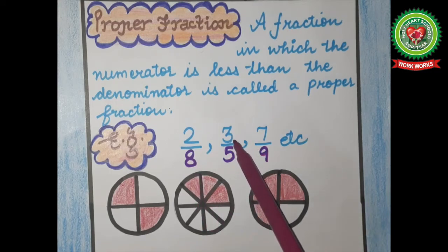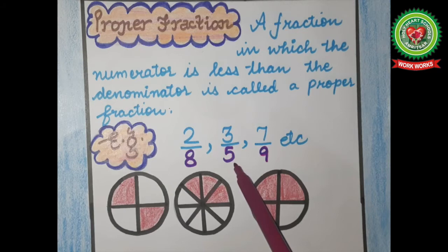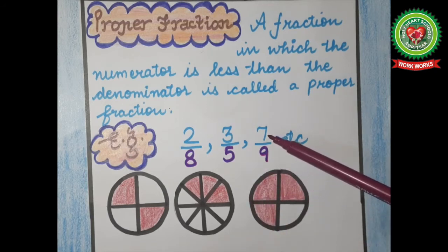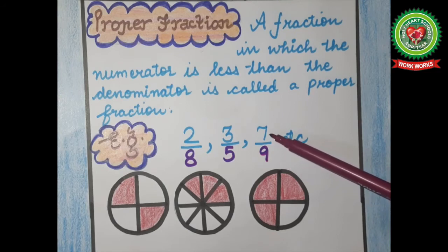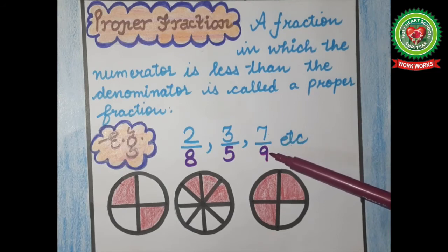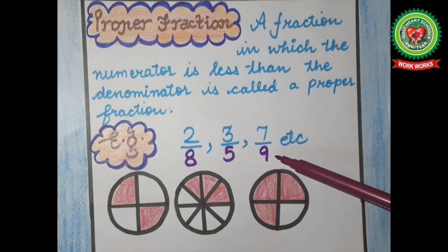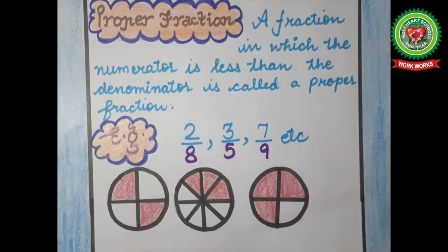In the same way, three — that is numerator — is less than five, that is denominator. Three is less than five, so that means this is a proper fraction. In the next example, seven is less than nine, meaning numerator is smaller and denominator is greater. So these all are proper fractions. Let's understand it with the help of figures.